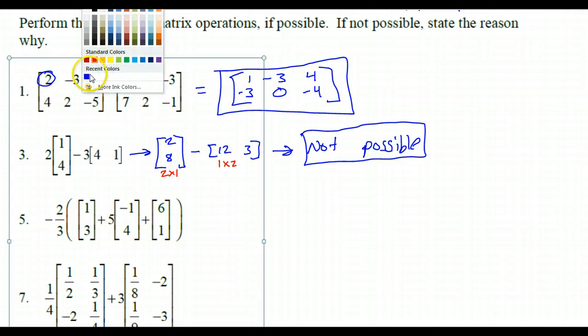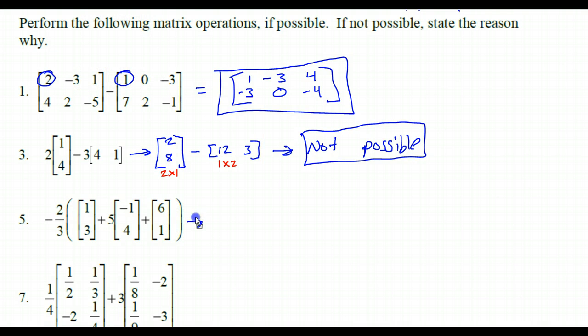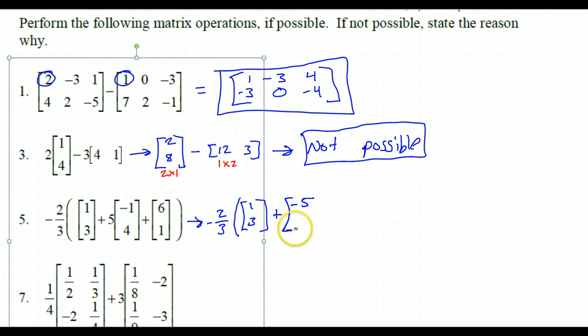Let's do number 5 here in stages. I'm going to save the negative 2 thirds out front for later. So right now I've got my 1, 3 matrix plus.